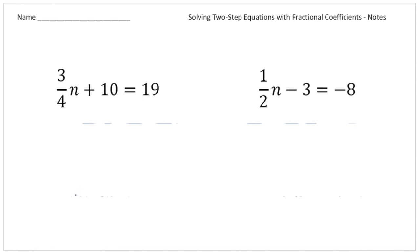So the first step you want to do is get rid of the constant. The opposite of adding 10 is taking away 10. So I'm going to take away 10 from both sides of the equation for this problem. And when I do that, I end up with 3 fourths n equals 9 because 19 take away 10 is 9.